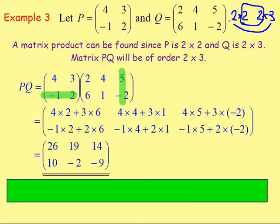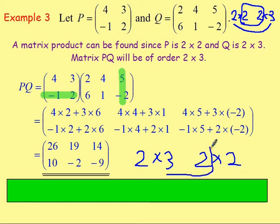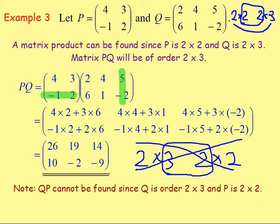And that is our answer. If we were asked to work out the matrix product QP, could we find that? Matrix Q is of the order 2 by 3 and matrix P is of the order 2 by 2. The inner numbers — 3 and 2 — are different, and if they are different, we cannot find the matrix product. So QP cannot be found since Q is of the order 2 by 3, P is of the order 2 by 2, and the inner numbers are different.